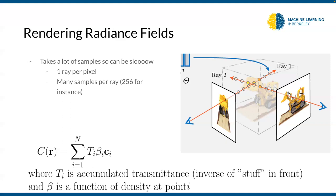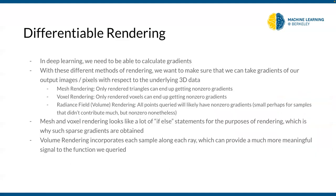Lastly, differentiable rendering. Pretty much everything we talked about for rendering turns out to be differentiable, but only for what we actually see. For mesh rendering, surfaces that are visible get positive gradients. For voxel rendering, voxels visible in the rendered image get non-zero gradients. Radiance fields actually solve this problem somewhat — since there's no defined surface, every sampled point has some impact on the final color, so every sample receives some gradient. You don't need to know the details, just know that differentiable rendering works, and only the visible elements receive gradients.